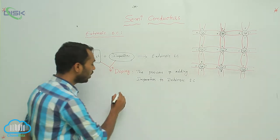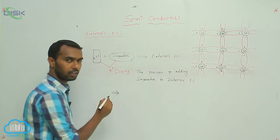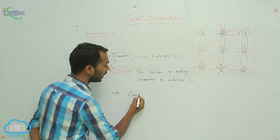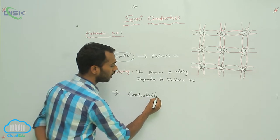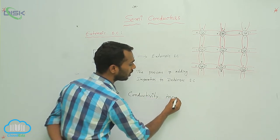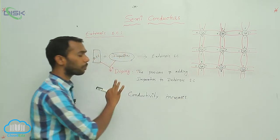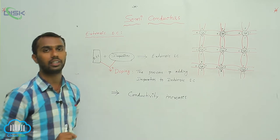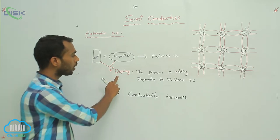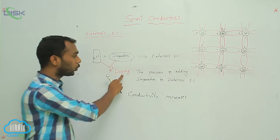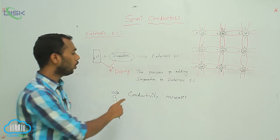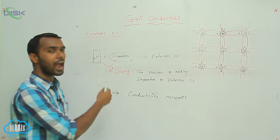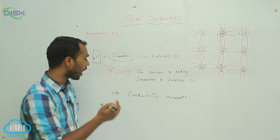What is the use of doping? If you dope a semiconductor — if you add some impurities — automatically conductivity increases. That is the main purpose of doping. An intrinsic semiconductor can conduct current, but only a small amount. After doping, the current level increases significantly.